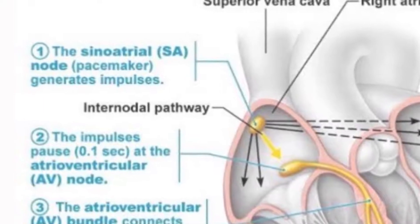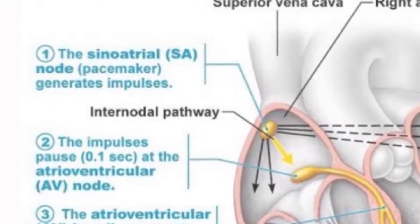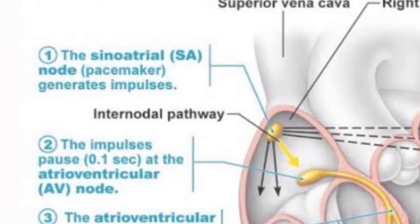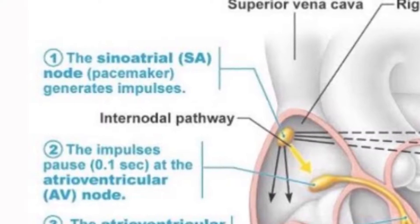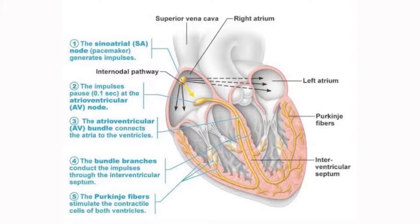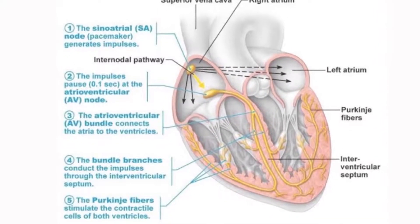The atrioventricular node is a small mass of fibers found in the atrioventricular septum — that is, the junction between the right atrium and the right ventricle. It electrically connects the atria and the ventricles.